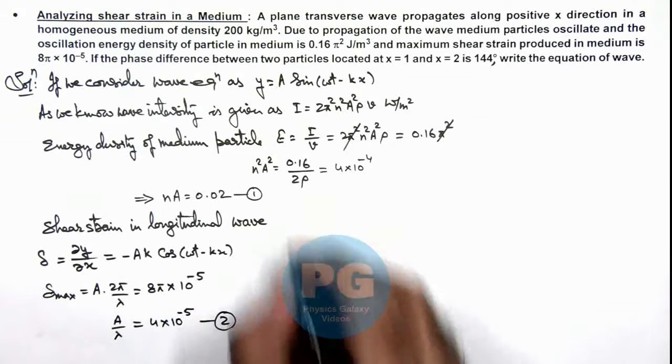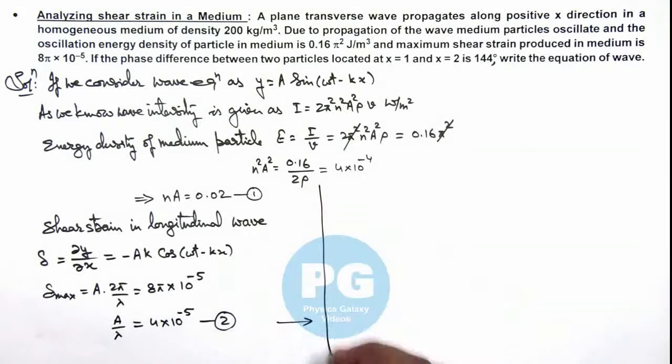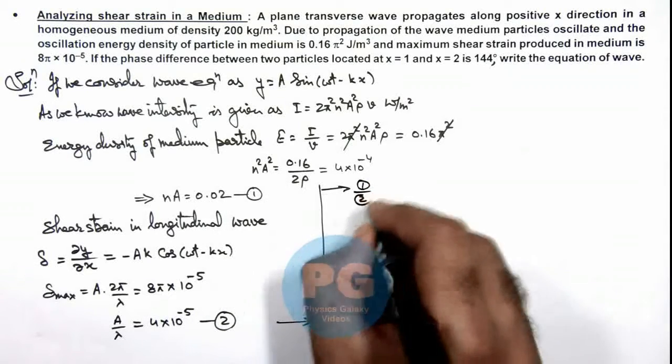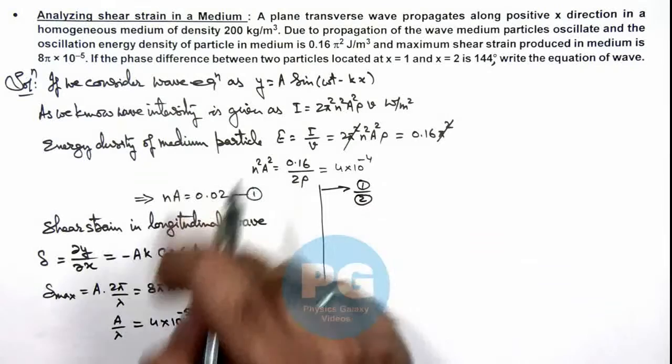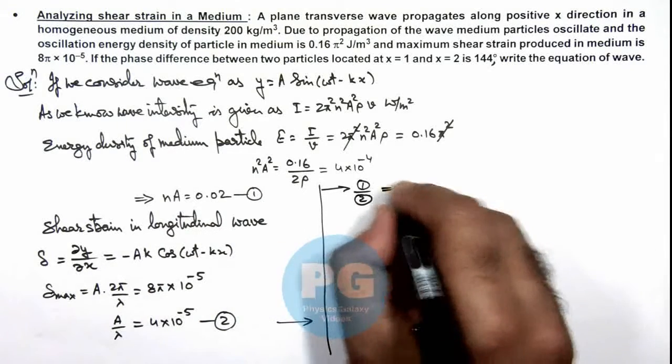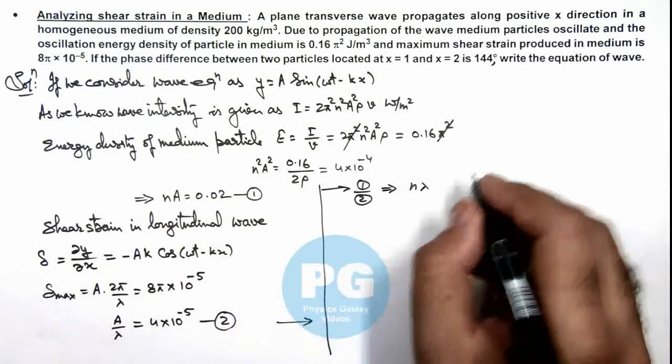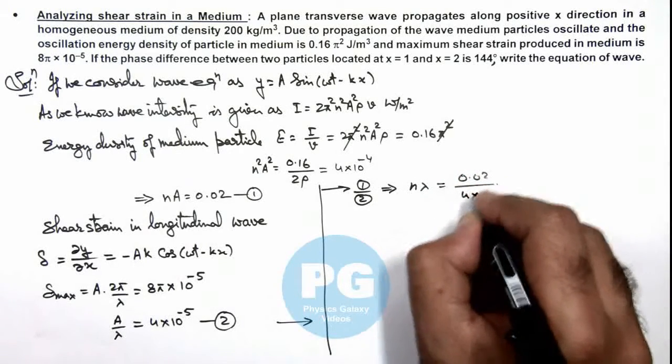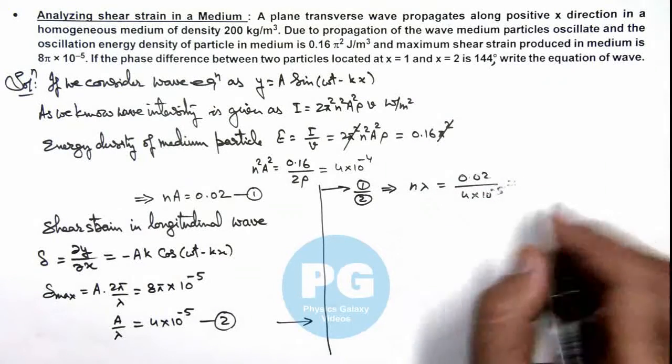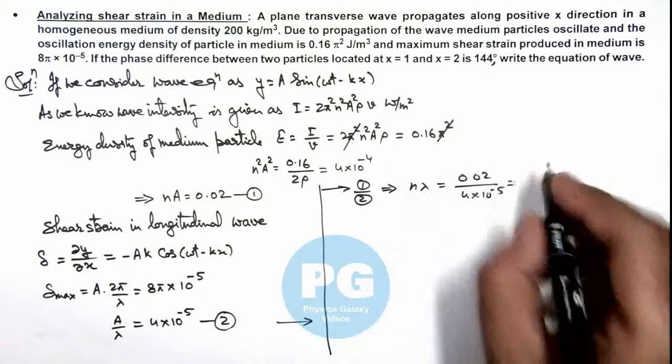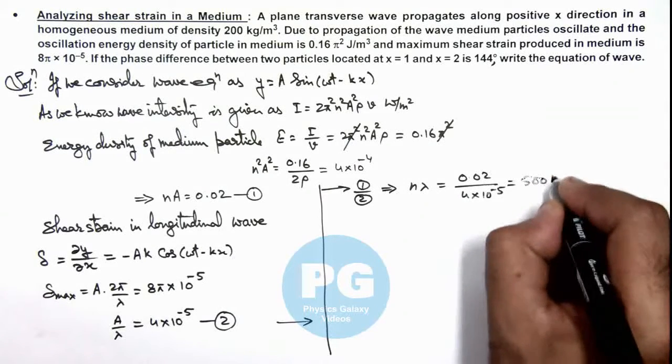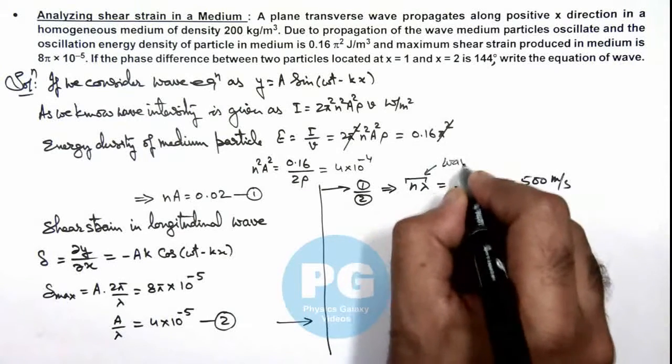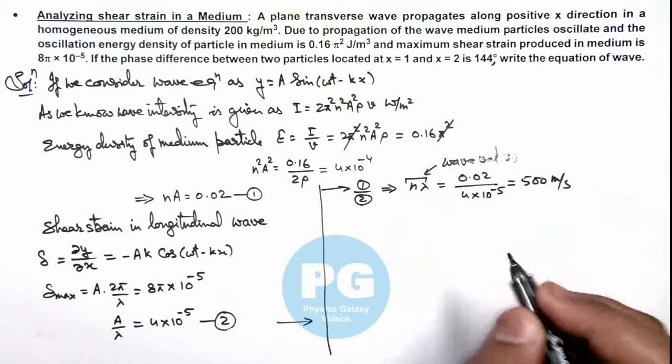And from here, if we further continue, then you can see if we divide equation 1 by 2, the division of these two equations will result: ay gets cancelled out, and the value of nλ is 0.02 by 4 × 10^-5, which is giving us the velocity of wave, and that is equal to 500 meters per second, as nλ we can write simply as wave velocity v.